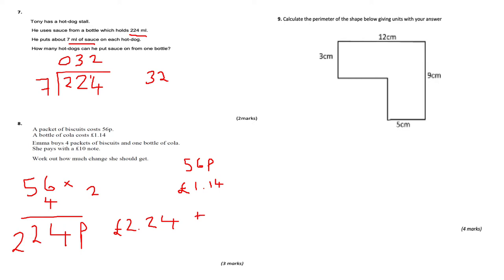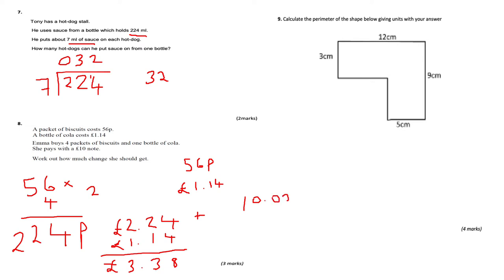Adding the £1.14 for cola using column addition: 4 add 4 is 8; 2 add 1 is 3; 2 add 1 is 3. The total cost is £3.38. Now calculate £10.00 take away £3.38 to find the change.